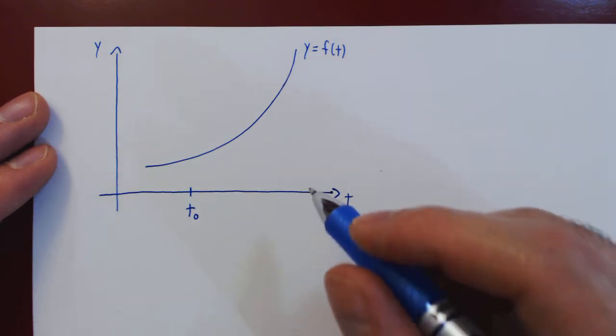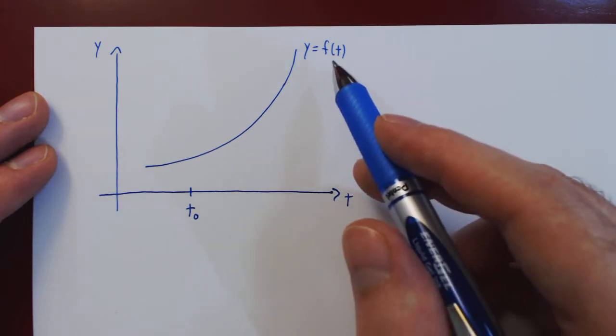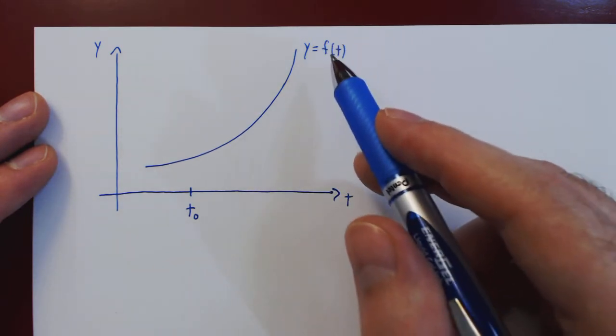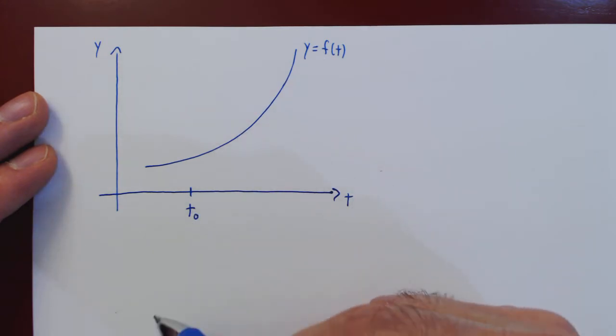In this video, we want to give an equivalent formula to find the instantaneous velocity of an object moving in a straight line at a fixed point in time, say t0.